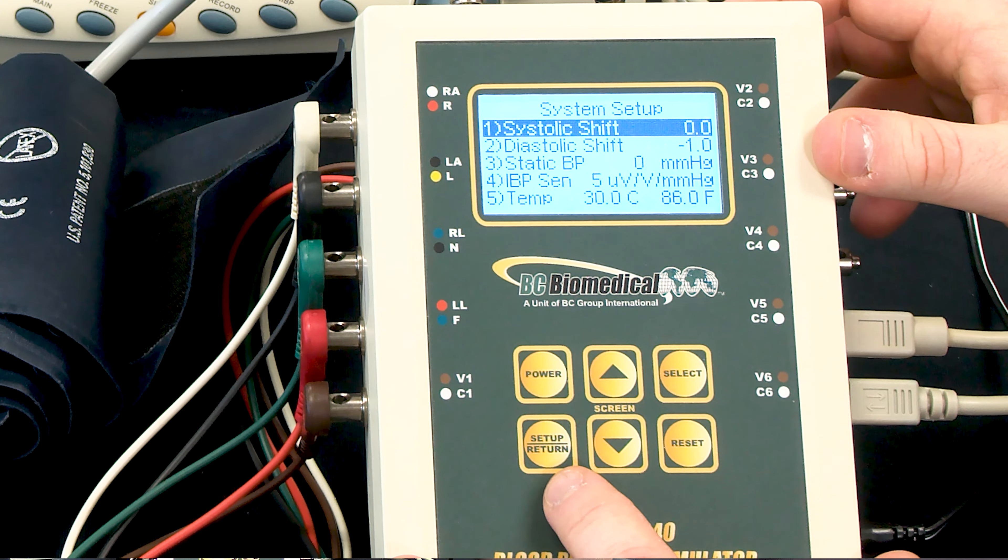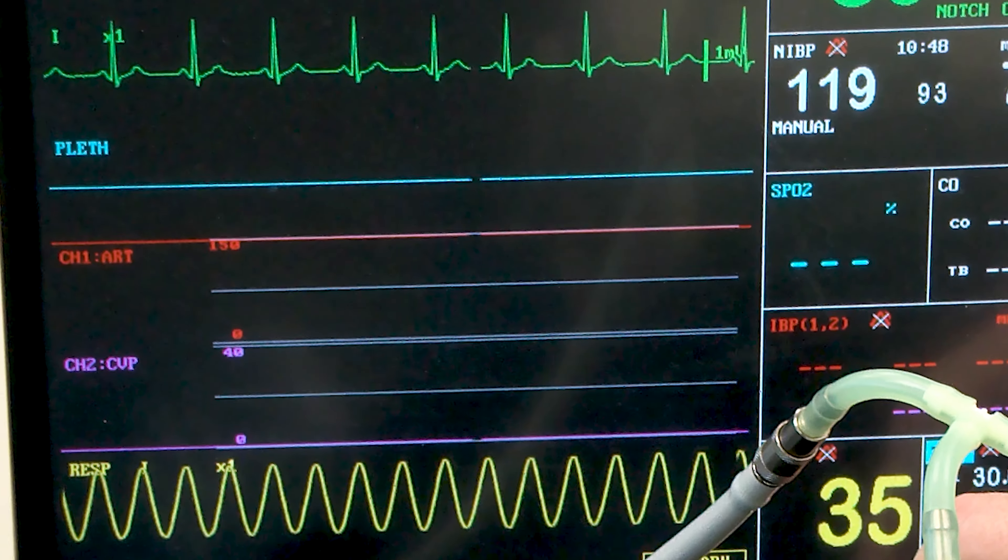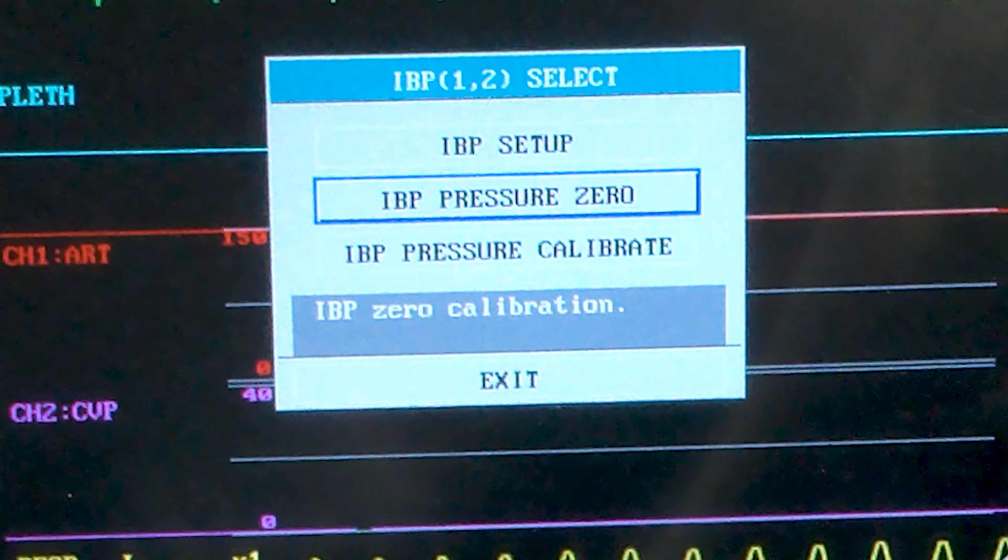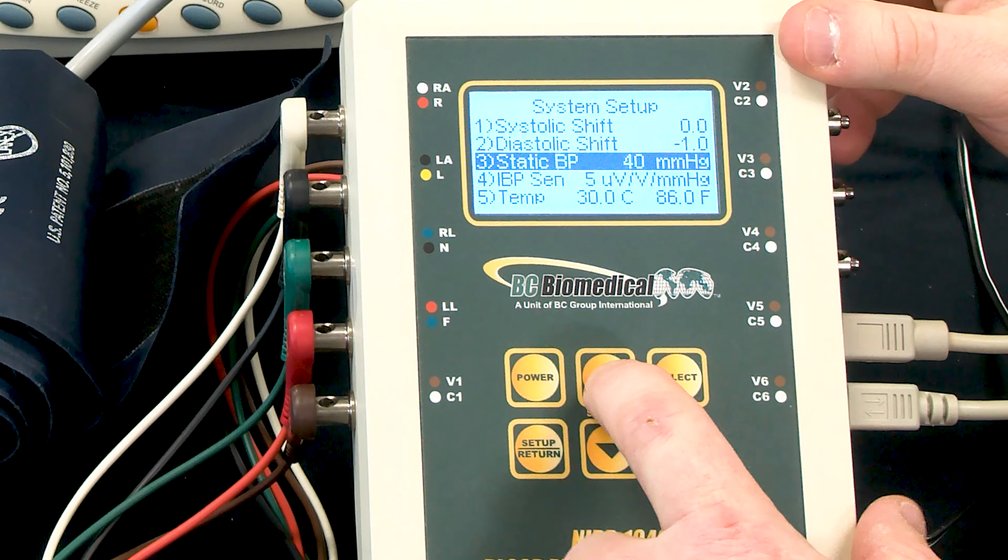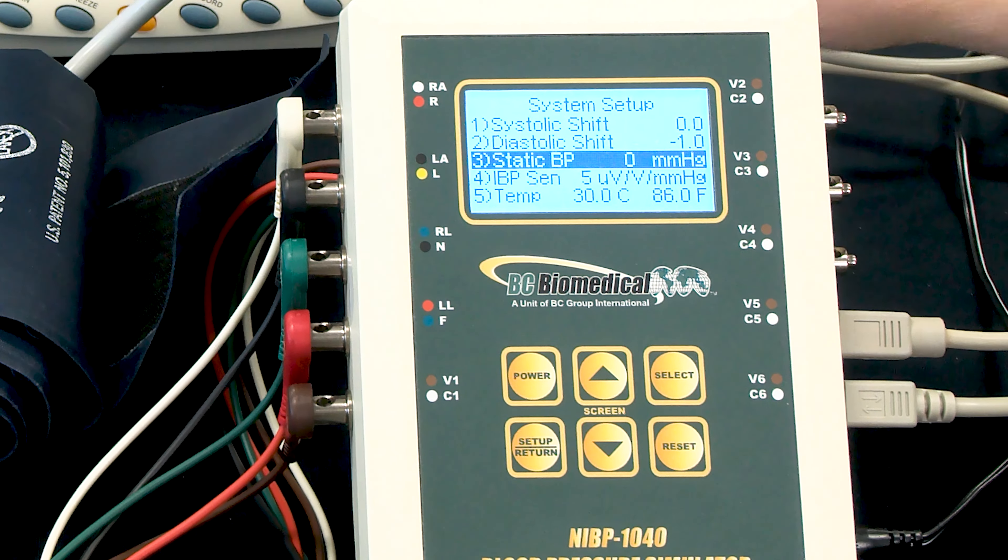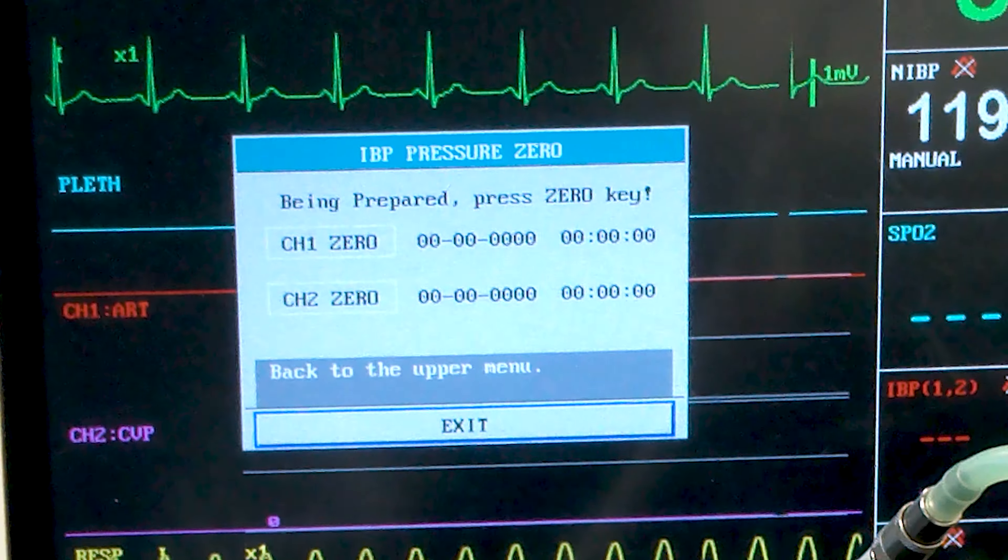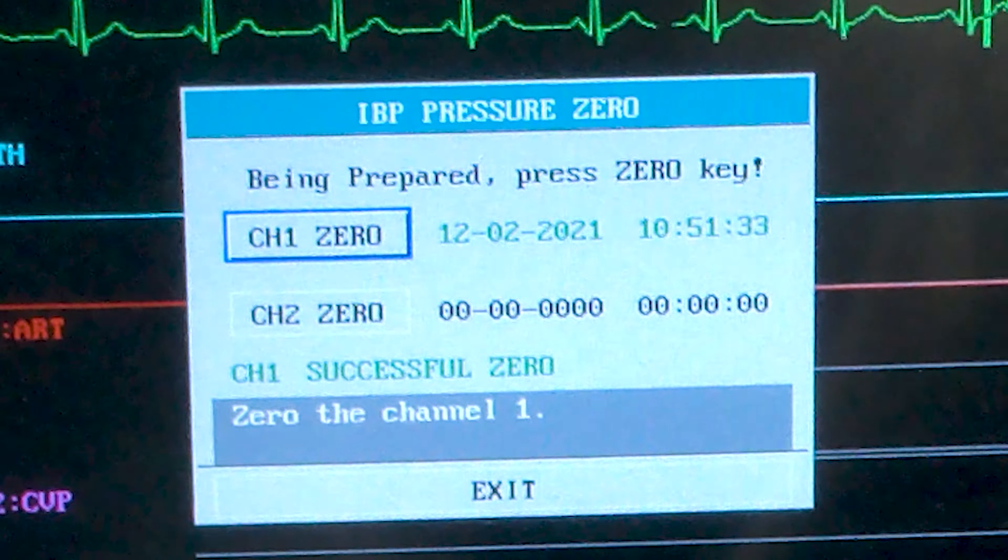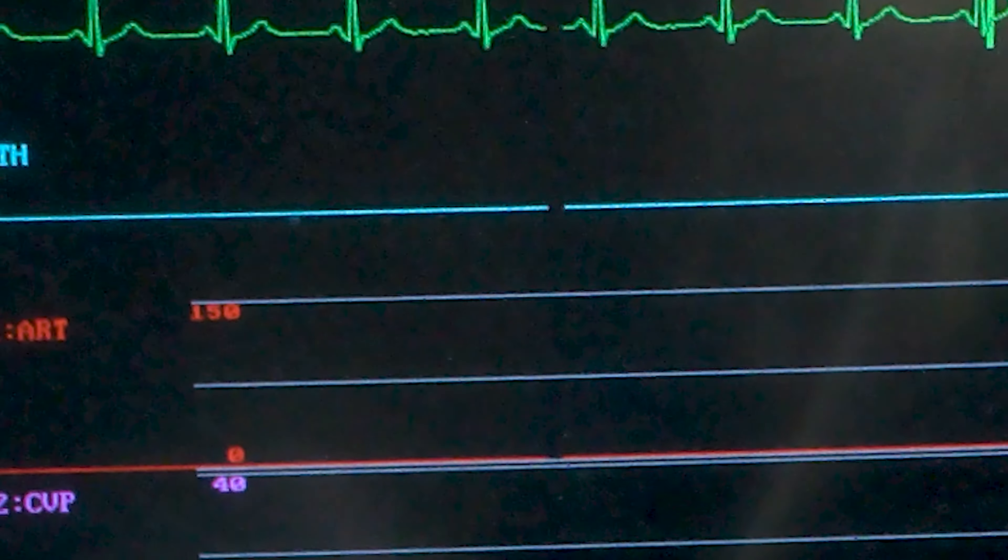So to do that, we'll go to a static blood pressure setting by going to the setup menu, and we'll go to the monitor configuration for invasive blood pressure, and we'll select IBP zero. Now we have to make sure that the static blood pressure is set to zero, and we can do that by scrolling to the static blood pressure and adjusting using the up and down arrows. So with zero millimeters configured, I press input zero on the monitor, and I tell it the channel that I'm connected to, and now we have zero pressure shown on the monitor.